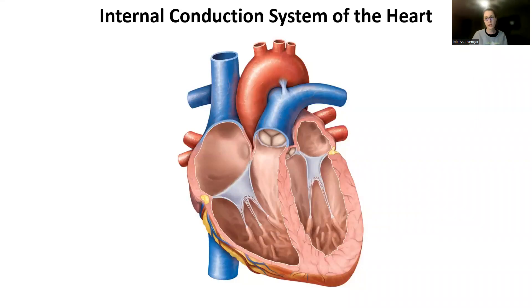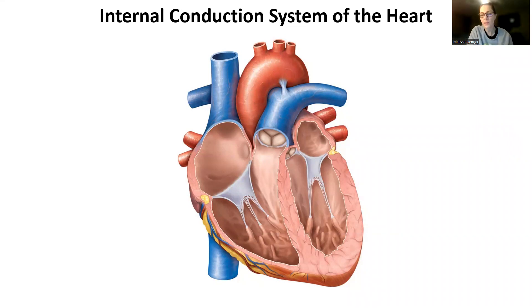The next part of the physiology of the heart is going to require us to understand how the heart creates its heartbeat — how it generates the electrical message in order to contract the muscle. This is no different than how skeletal muscle needs a nerve impulse in order to cause it to contract. The cardiac muscle cells also need some sort of an electrical impulse.